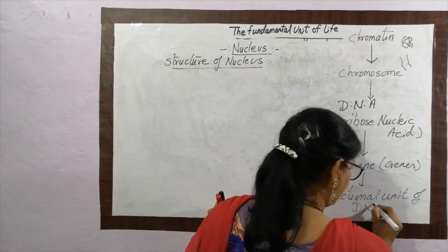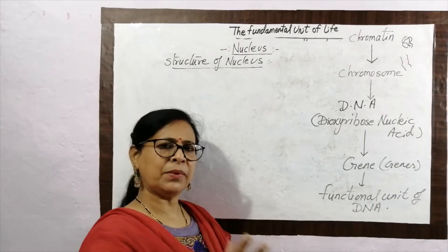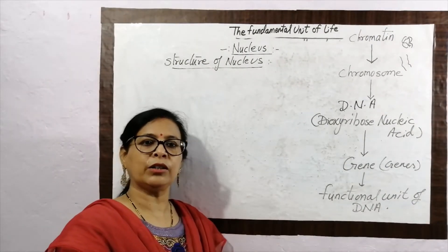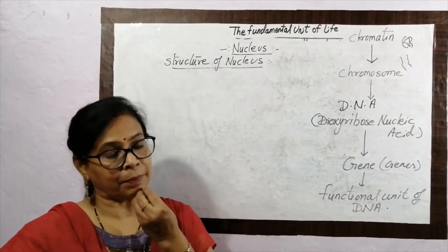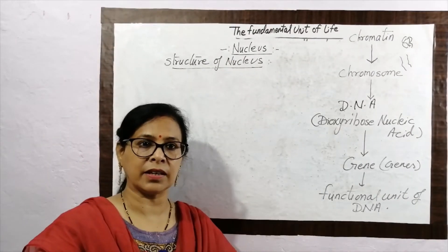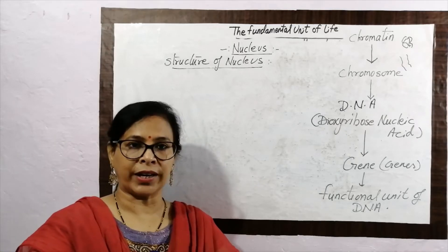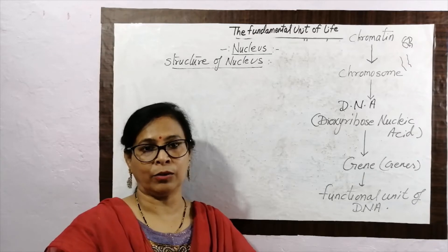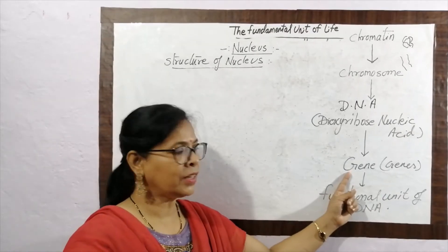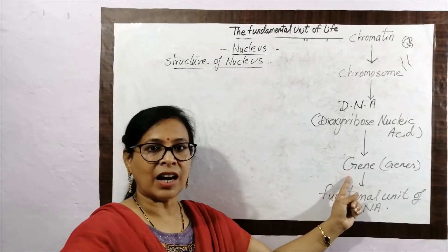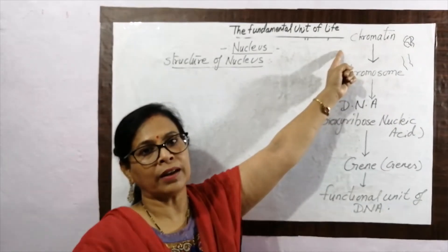The functional unit of DNA is called a gene. Why is it important? Because you resemble your family members — your eyes, your height, your skin, your hair. The reason you resemble your family members is because of genes. Genes are present on DNA. Chromatin is the advanced structure, and when the chromosome comes into cell division, the chromosome is the structure that forms.